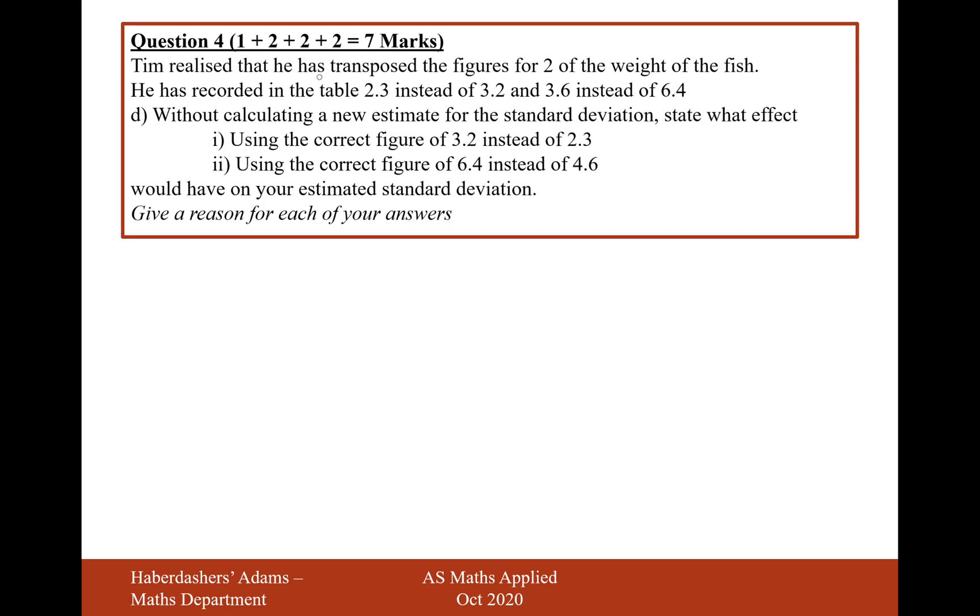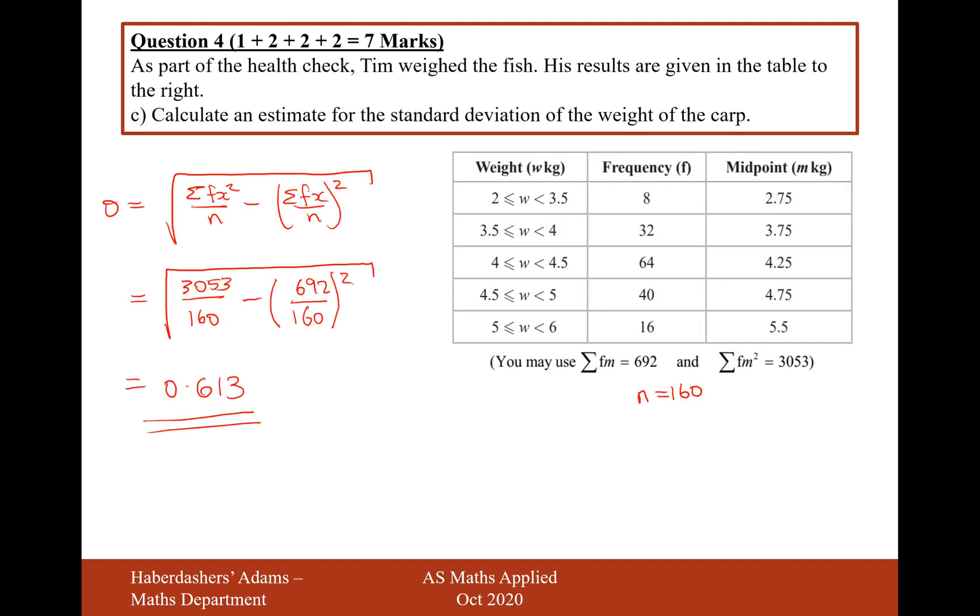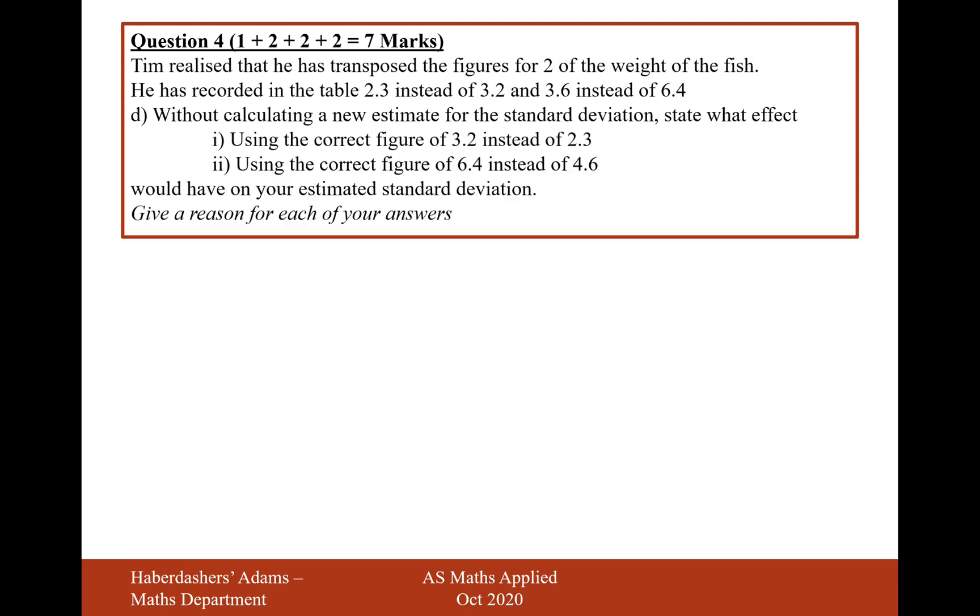Moving on to part D. Tim realized that he has transposed the figures for two of the weight of the fish. He has recorded in the table 2.3 instead of 3.2 and 3.6 instead of 6.4. Without calculating an estimate for the standard deviation, state the effect of using the correct figure of 3.2 instead of 2.3. Well, in that case, let's have a little look at the mark scheme. This data would have no effect on the piece of data would remain in the same class. Because if we have a little look back at our data sets, 3.2 and 2.3 would still remain in that same class of 2 to 3.5. So that's not really going to have any effect.